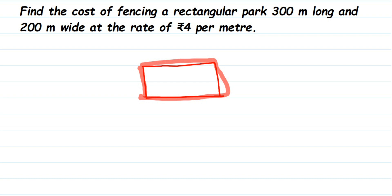So here we have to find out the perimeter. Perimeter is the boundary. We have to first find out the perimeter of this rectangular park. Once we have got the total distance, then later we're going to find out the cost of it.